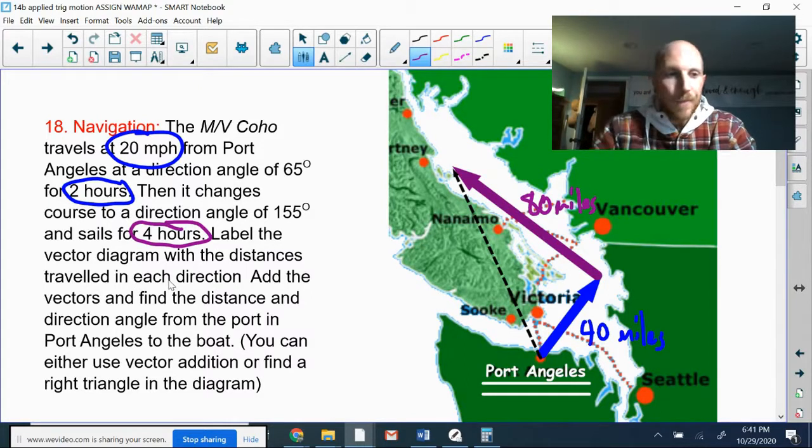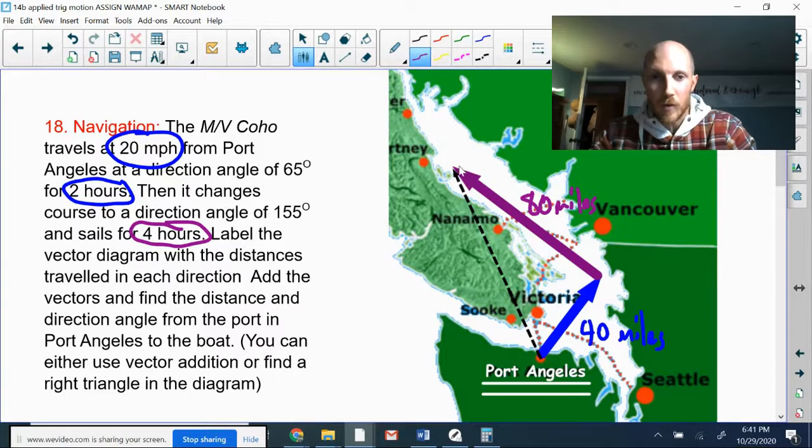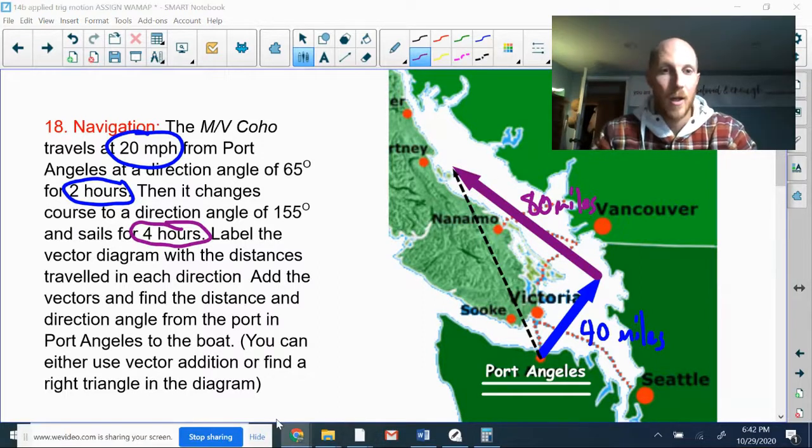Add the vectors and find the distance and direction angle from the port in Port Angeles to the boat up here in the inside passage. Let's do a closer examination of these two direction angles before anything else.